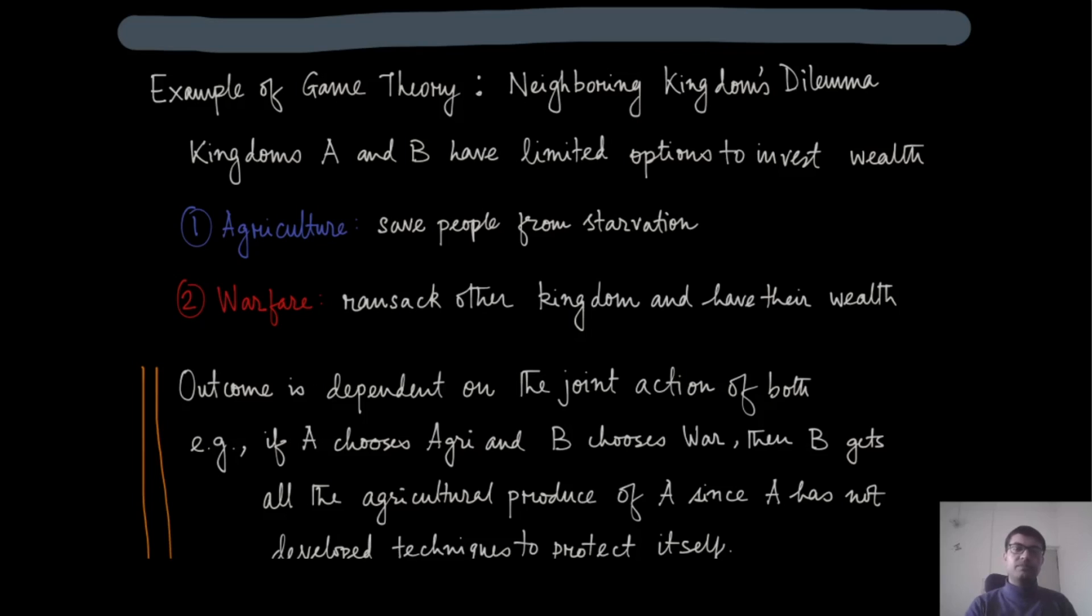What one can immediately see is that the final outcome that we are going to predict is not dependent alone on one of the kingdoms—it depends on the action that has been picked by both these kingdoms together. For instance, if one kingdom decides to go for war and the other chooses agriculture, then the kingdom which chose to go to war will essentially attack and win without much resistance.